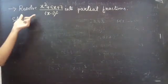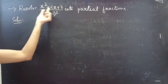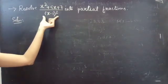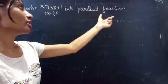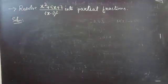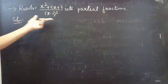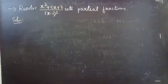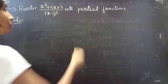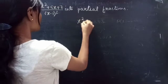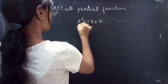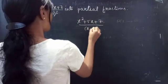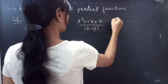Problem: Resolve (x² + 5x + 7) / (x − 1)³ into partial fractions. Firstly, we will check whether the given fraction is a proper fraction or improper fraction. So we are given (x² + 5x + 7) / (x − 1)³.